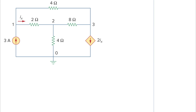In this video I will explain how to determine the voltages at the nodes. We are given this circuit here, and our goal is to find out what the node voltages are. We have node one so the voltage here will be V1, the voltage here will be V2, and the voltage here will be V3. Our goal is to find V1, V2, and V3, and we need to use nodal analysis.